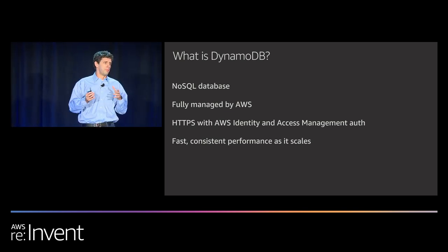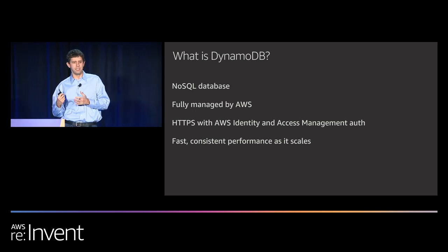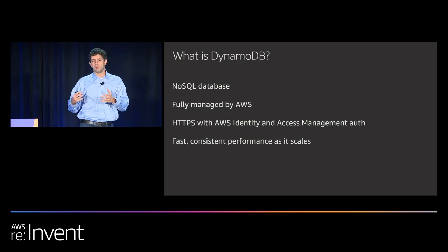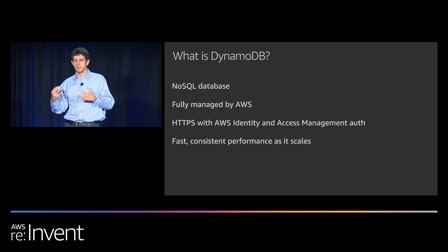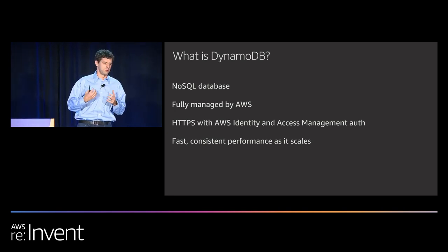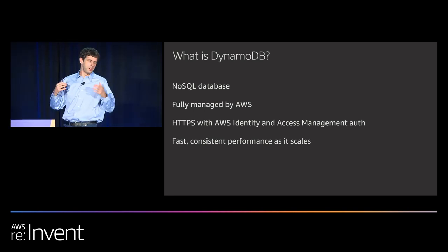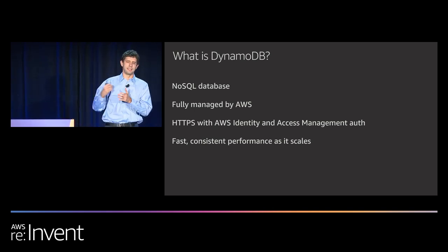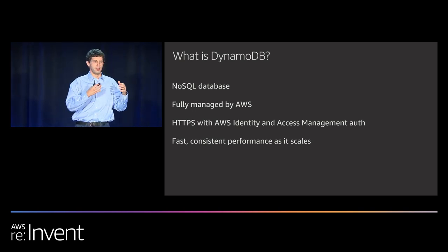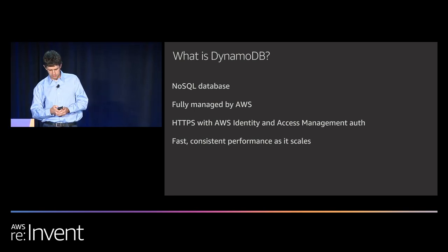Most databases use a persistent TCP connection, but not Dynamo — it uses an HTTPS connection, a more stateless connection model, and AWS IAM for authentication. So if you're using compute on AWS like EC2 instances or Lambda functions, you've probably got a role associated with that compute, which works really well. You don't have to worry about rotating auth tokens. And finally, the big reason a lot of people use DynamoDB: you get fast, consistent performance as it scales — single-digit millisecond latency at one gigabyte, at 100 gigabytes, a terabyte, or 10 terabytes.